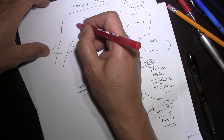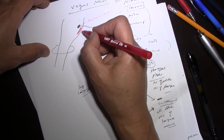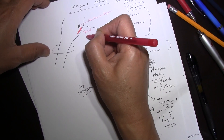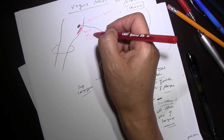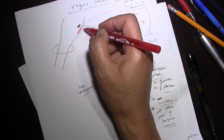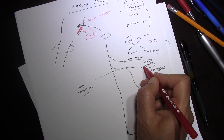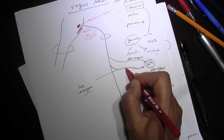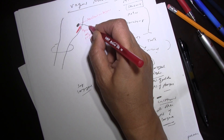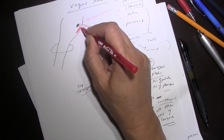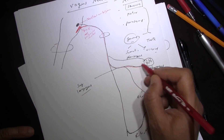Then we have a sensory nucleus — a general sensory nucleus common to more than one cranial nerve — called the spinal trigeminal nucleus. This trigeminal nucleus, which receives sensation from the head, also receives sensation through the vagus nerve from the larynx. Using a red color code: the internal laryngeal nerve carries sensation from the upper half of the larynx back to the spinal trigeminal nucleus.